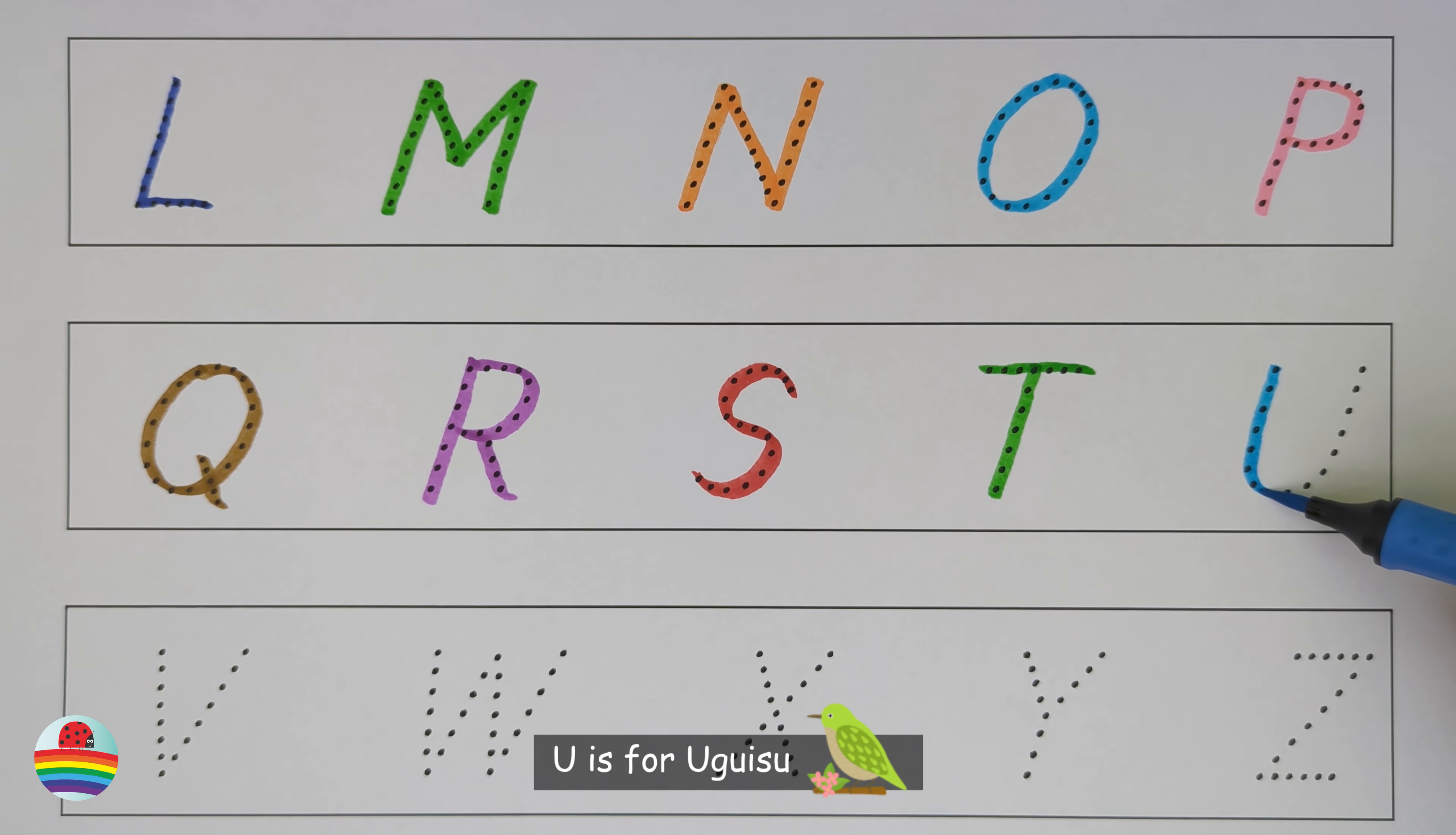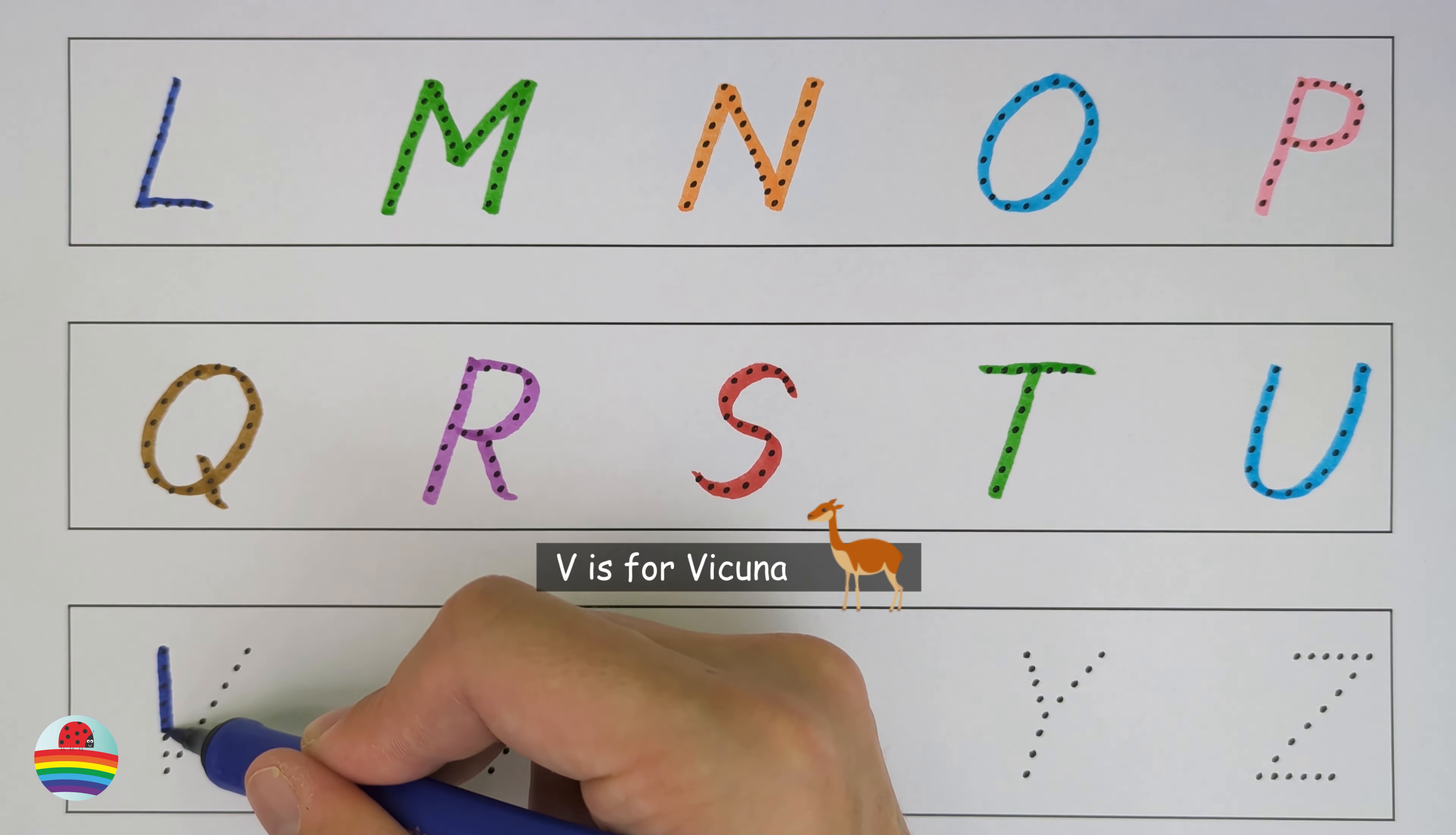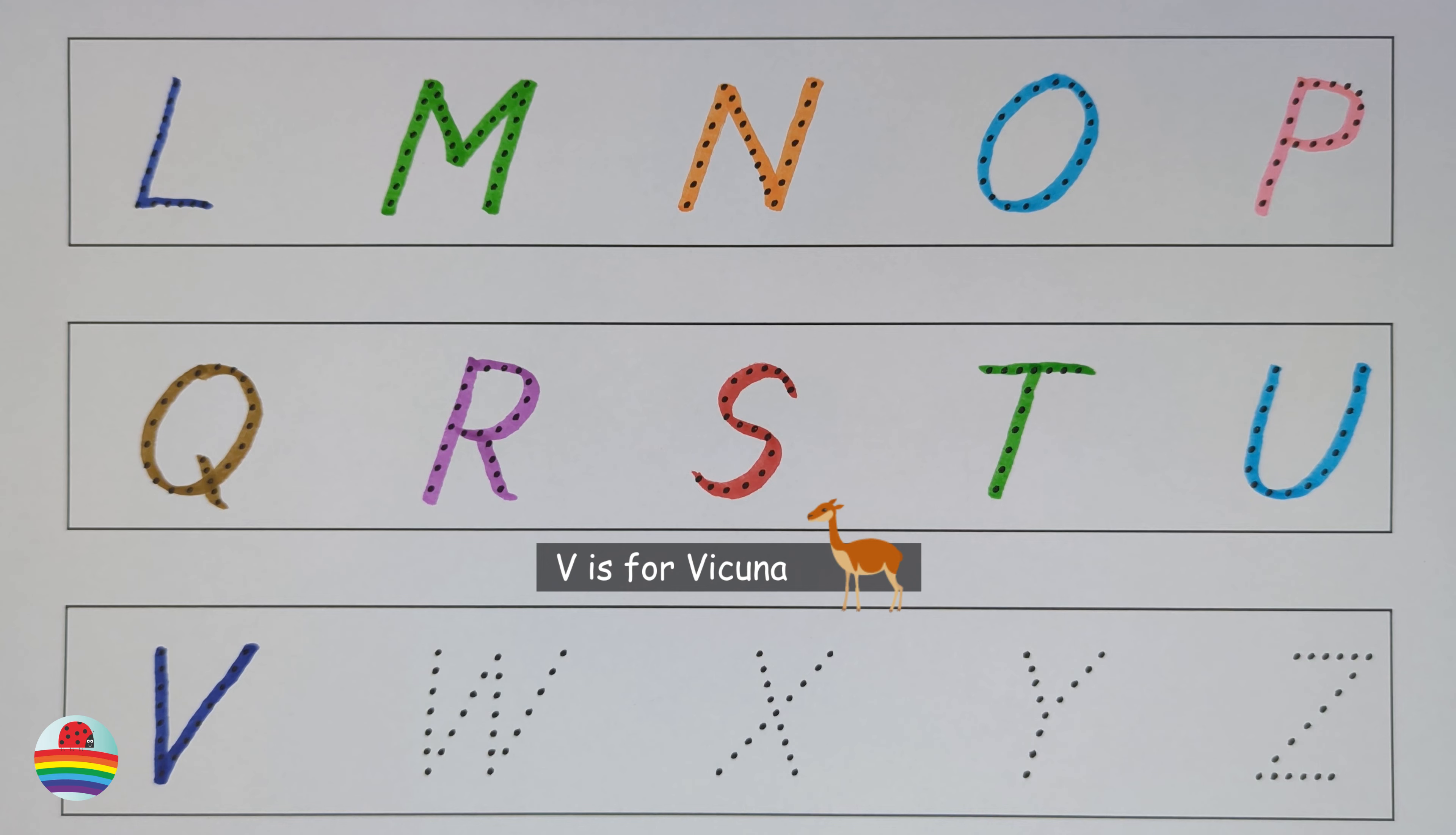U. U is for Uguisu. U. V. V is for Vicuna. V.